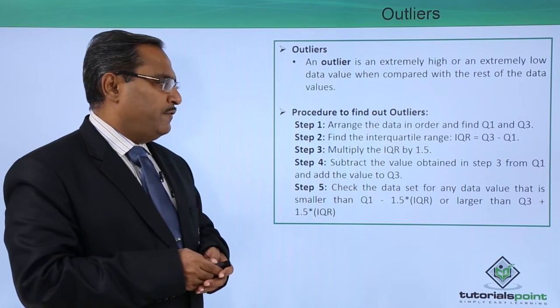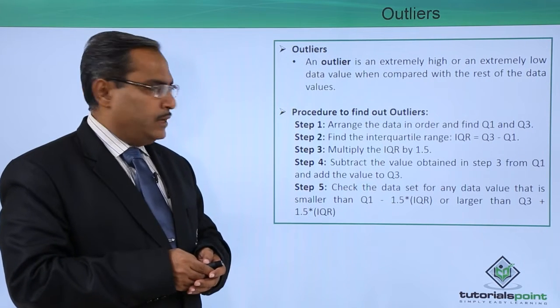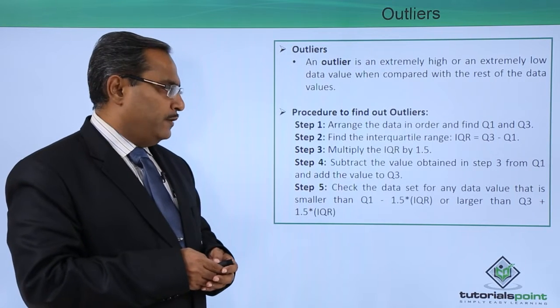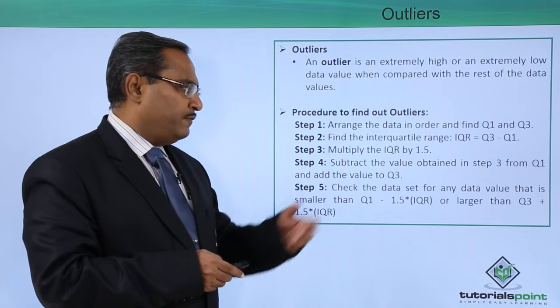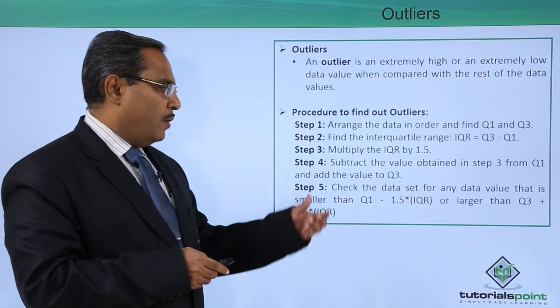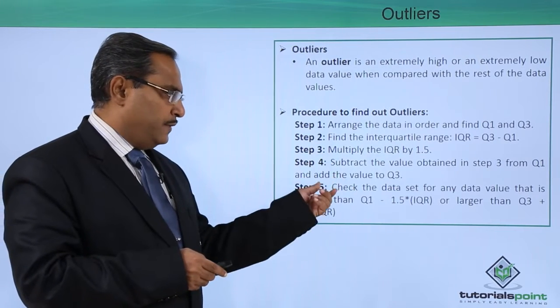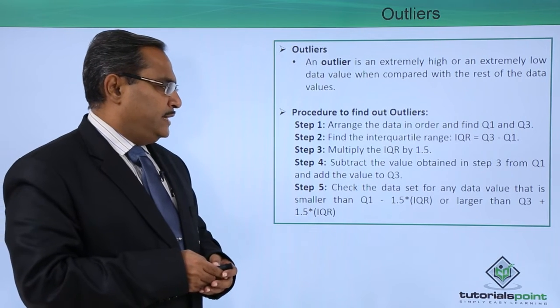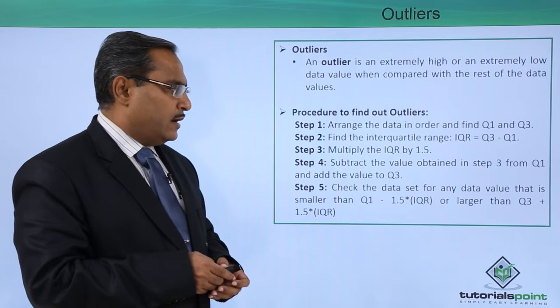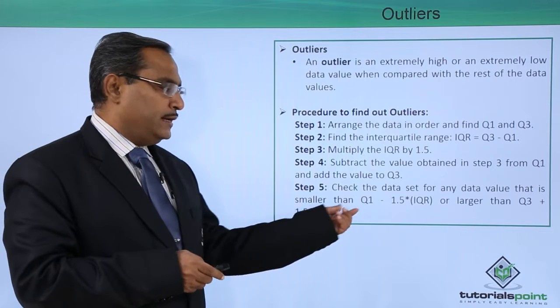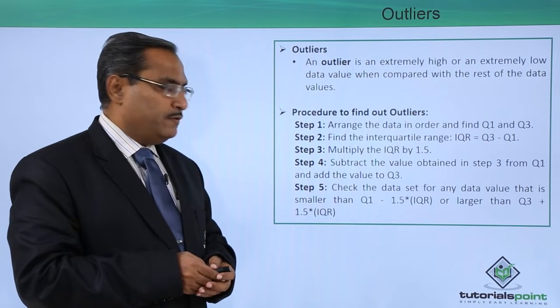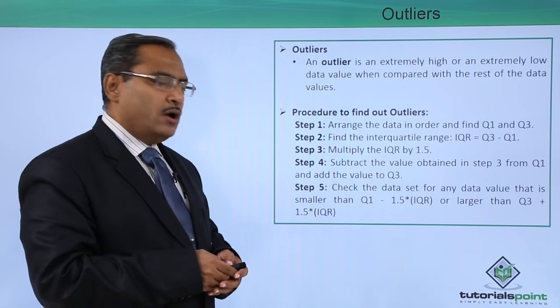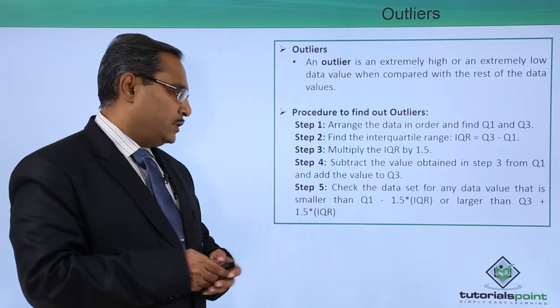Step 4: Subtract the value obtained in step 3 from Q1 and add that value to Q3. Step 5: Check the data set for any data value that is smaller than Q1 minus 1.5 times IQR or larger than Q3 plus 1.5 times IQR.